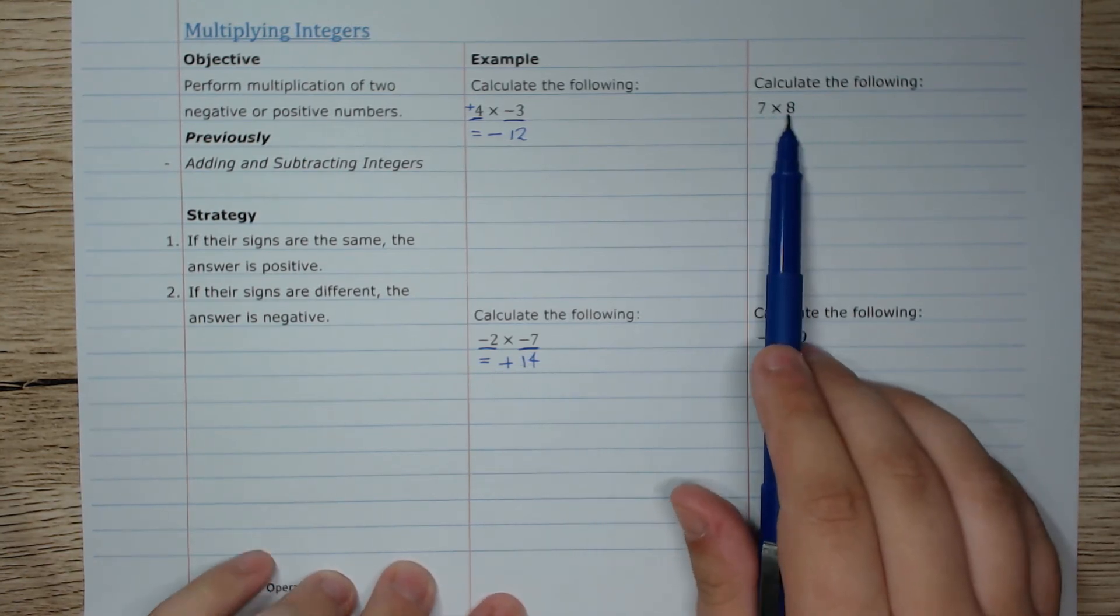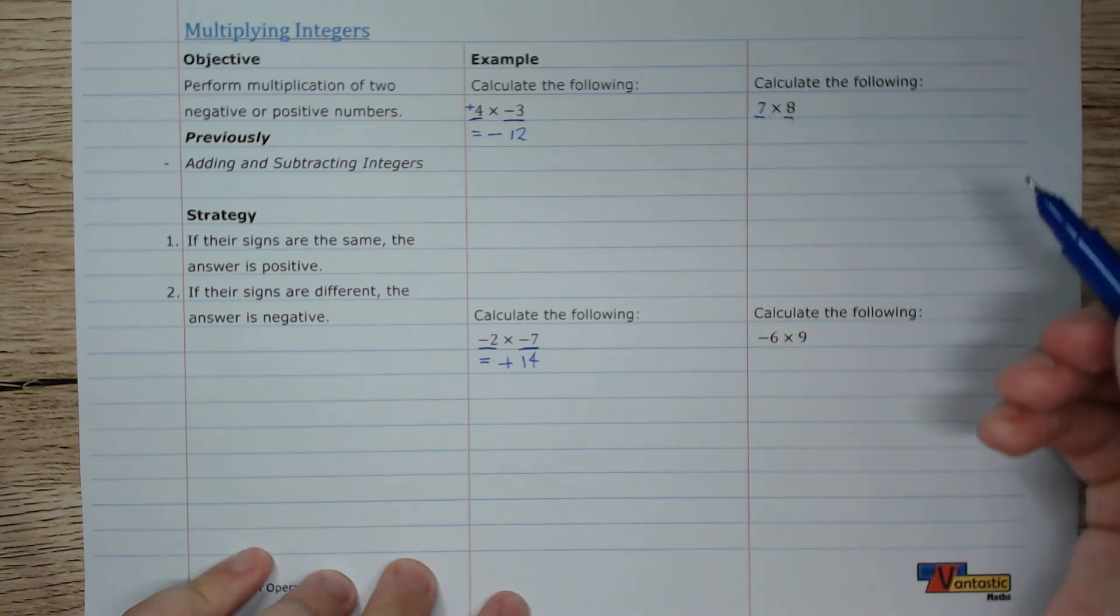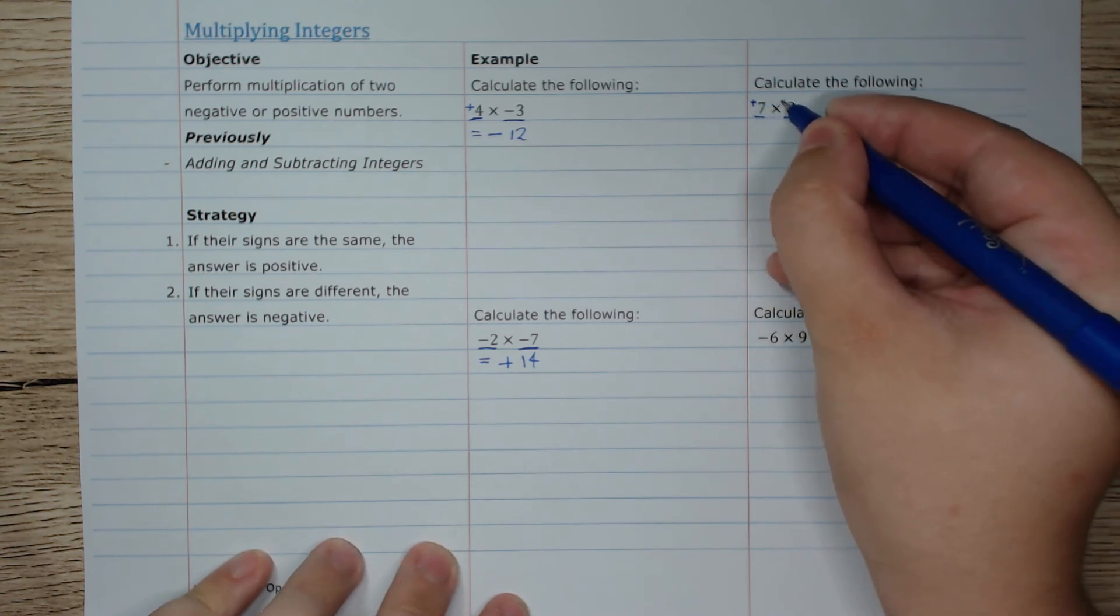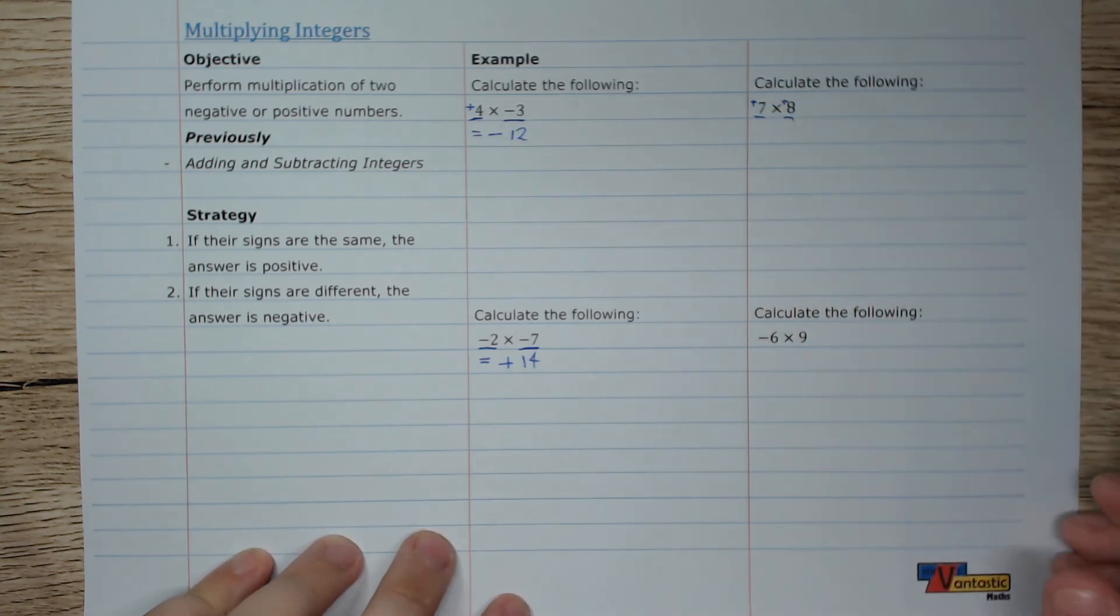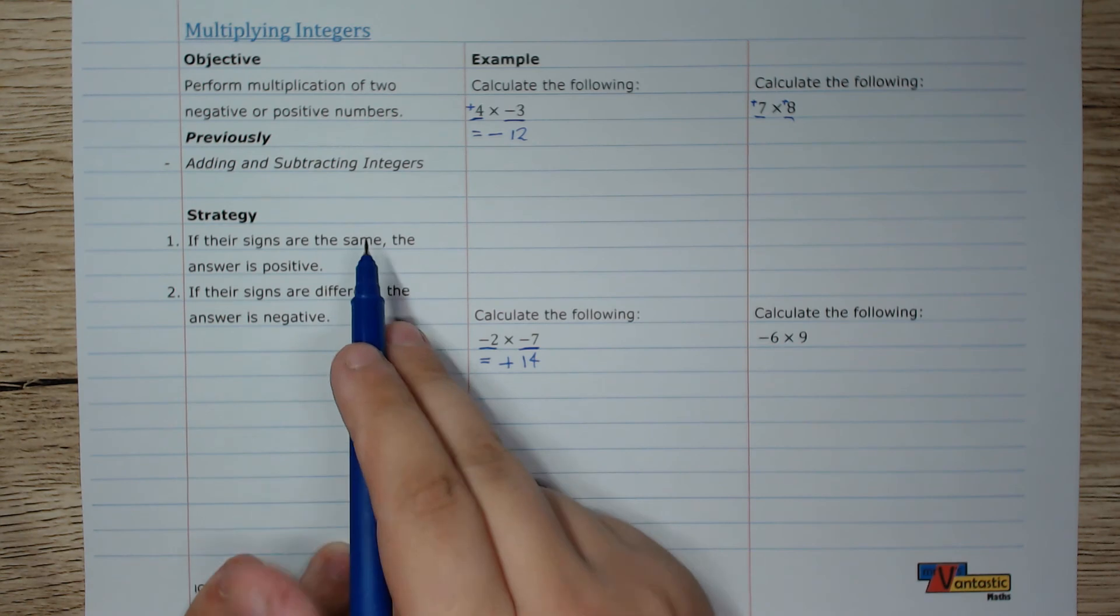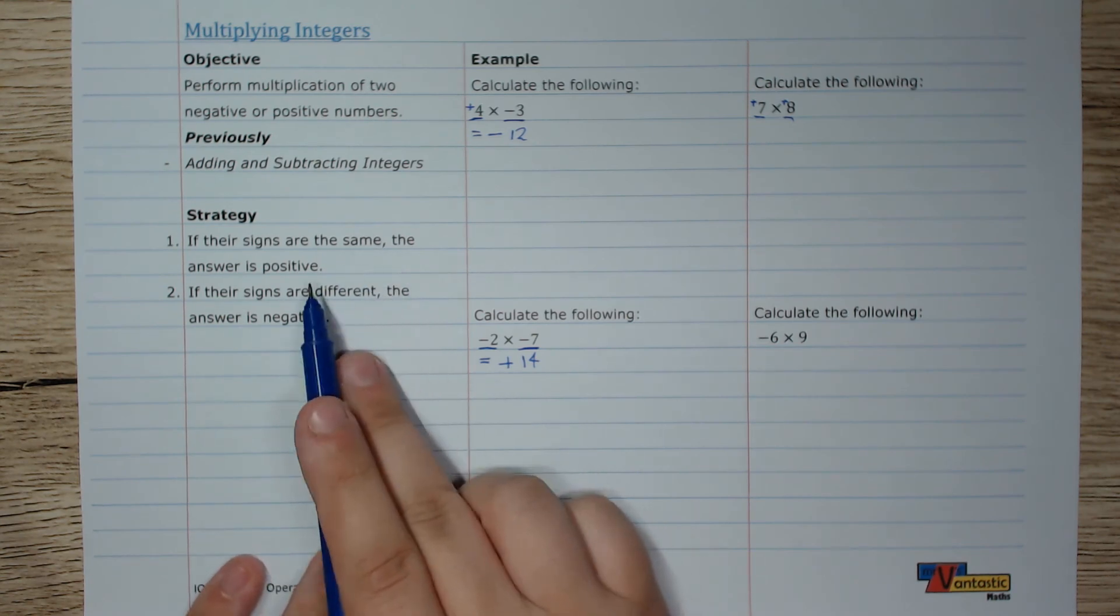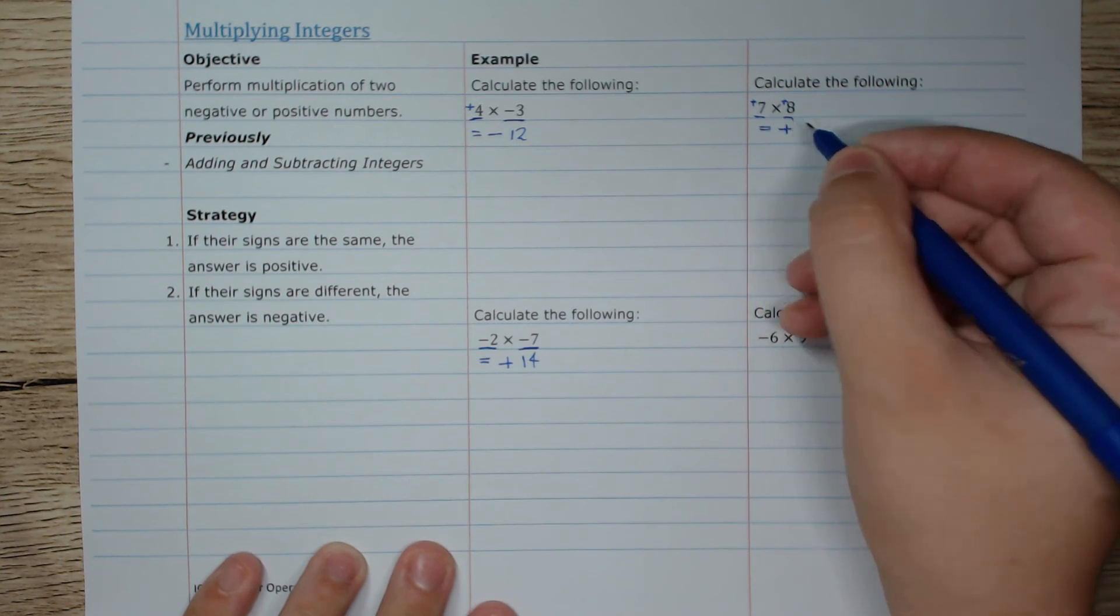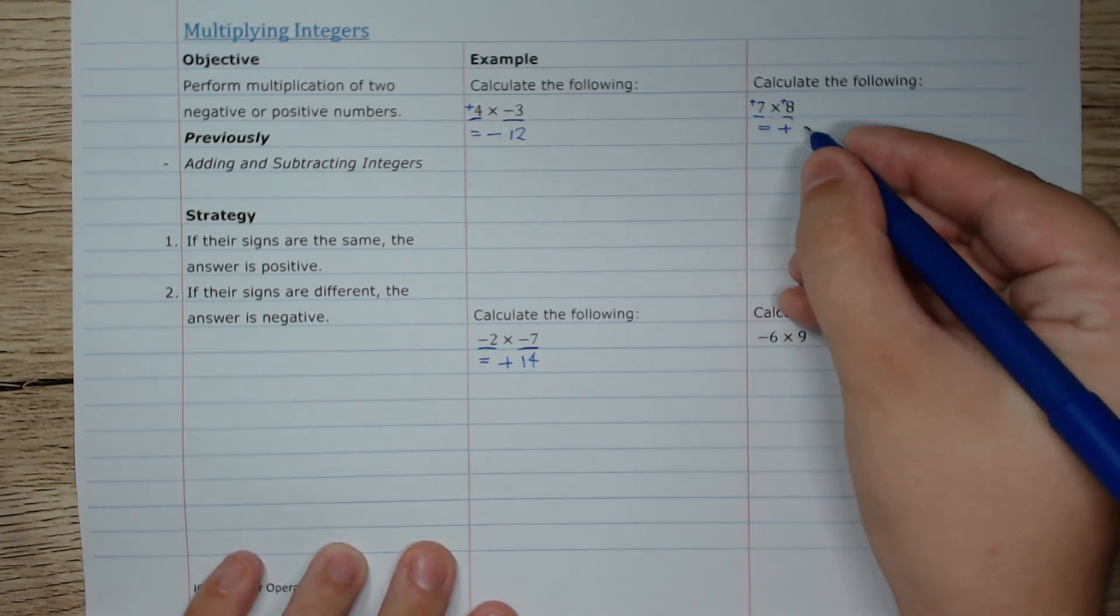In this problem here, we have 7 and we have 8. We're not told their signs, so we're going to assume they're both positive. So positive 7 and positive 8. Their signs are the same, so the answer is going to be positive. So we're going to have positive 7 times 8 is 56.